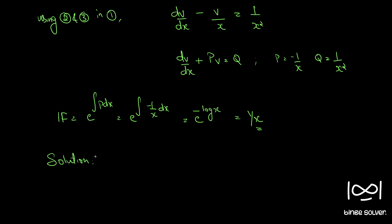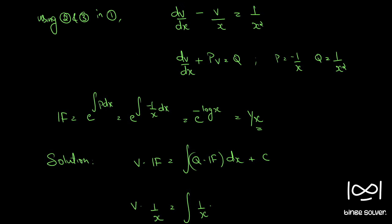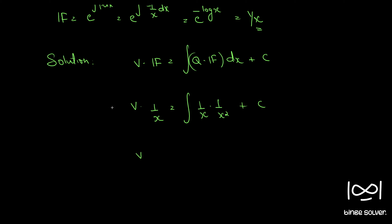The solution to such a linear differential equation is given by v times the integrating factor equals integral of Q times the integrating factor dx plus c. So v times 1/x equals integral of 1/x times 1/x squared dx plus c, giving v/x equals integral of x raised to minus 3, which is x raised to minus 2 divided by minus 2, plus c.